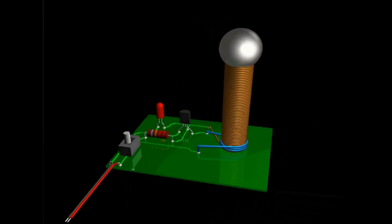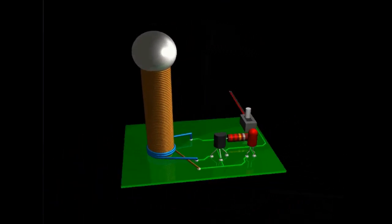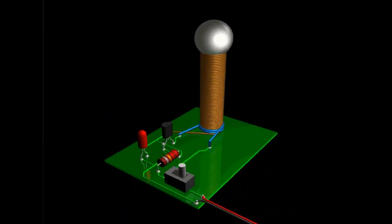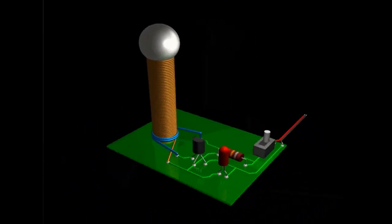The transistor in the circuit acts as a switch, rapidly turning the power supply on and off. This action, combined with the configuration of the coils and capacitors, induce a resonant effect that amplifies the voltage across the primary coil.